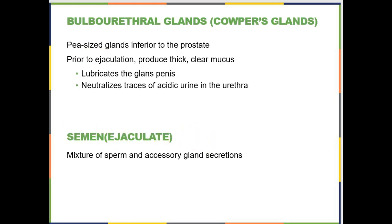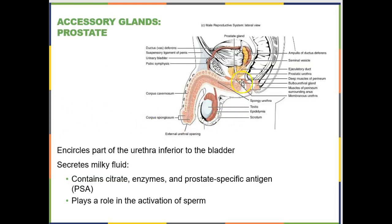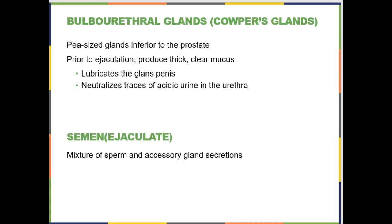There's one more gland we haven't discussed: the bulbourethral gland, formerly called Cowper's gland. This gland is active during excitation and intercourse. Prior to ejaculation it produces a thick, clear mucus that neutralizes any acid from urine left over in the urethra. The ejaculate is a combination of all of these different glandular secretions along with the sperm themselves.